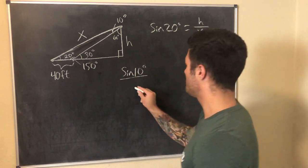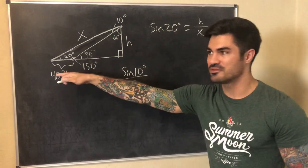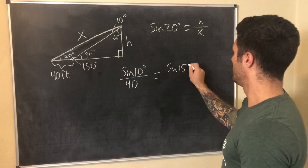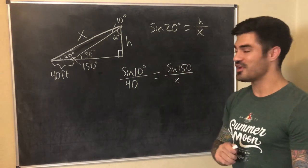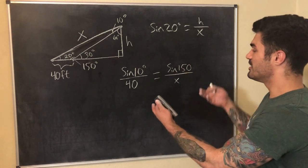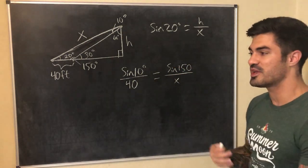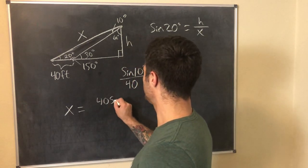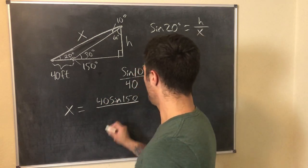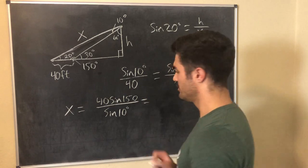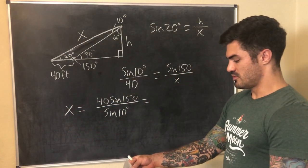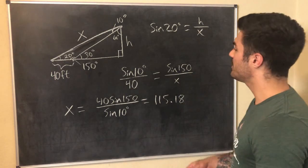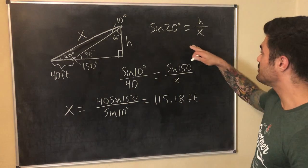Using law of sines on the non-right triangle: sine of 10 degrees over 40 equals sine of 150 degrees over x. Flipping both sides: x equals 40 times sine of 150 degrees over sine of 10 degrees. Punching that into the calculator gives x equals 115.18 feet.